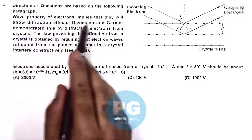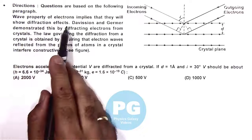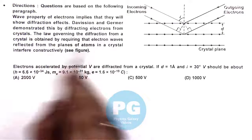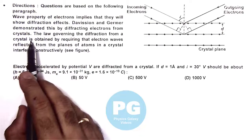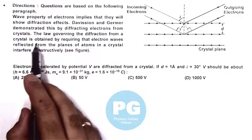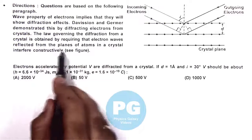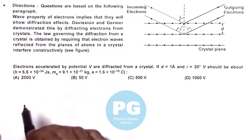Here it says the wave property of electrons implies that they will show diffraction effects. Davison and Germer demonstrated this by diffracting electrons from crystals. The law governing the diffraction from a crystal is obtained by requiring that electron waves reflected from the planes of atoms in a crystal interfere constructively.